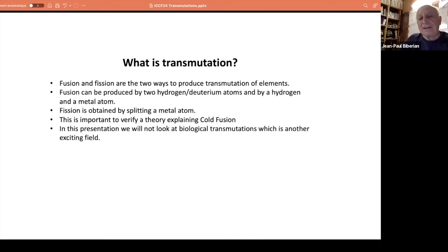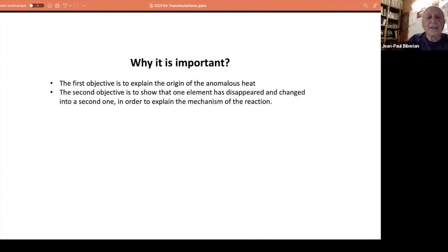Why do we need that? It's very important to verify a theory that will explain cold fusion. To do a theory, you need data, and you need to collect them by doing experiments. There's no way you can make a theory without data, because you need your theory to fit with the data. We want to understand the origin of the anomalous heat that's been measured by many scientists. Also, we would like to know not only the appearance of some elements, but also the disappearance of some elements. If we can see something appearing and another one disappearing, that's very positive and gives you the clue of a theory.